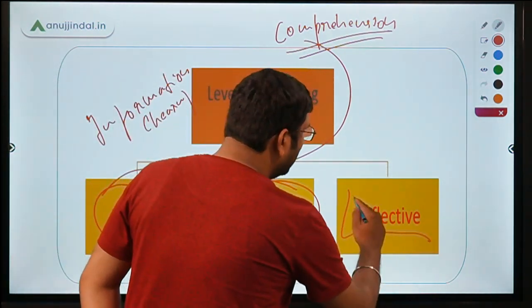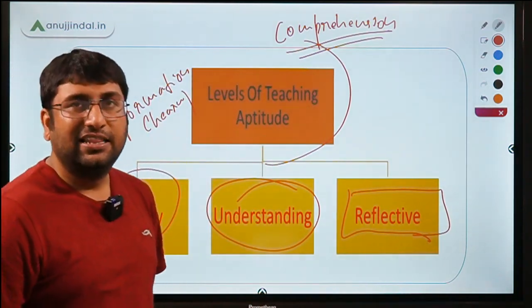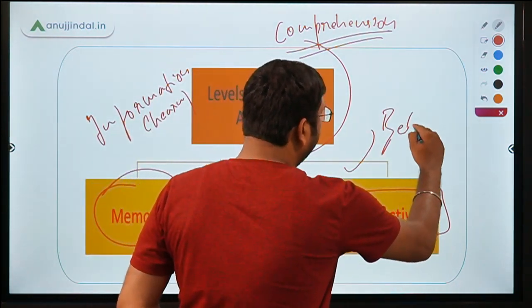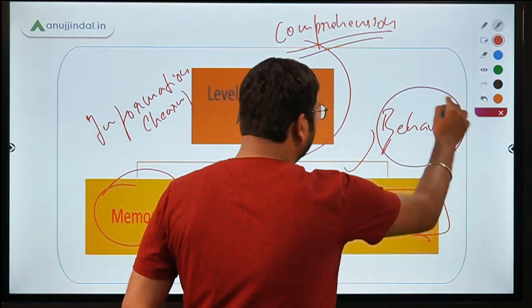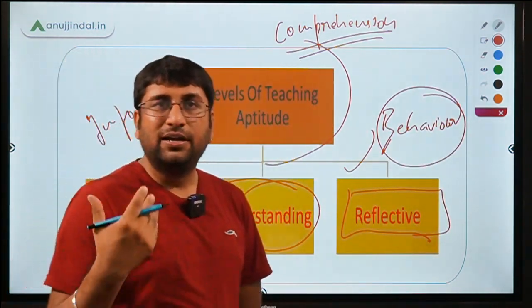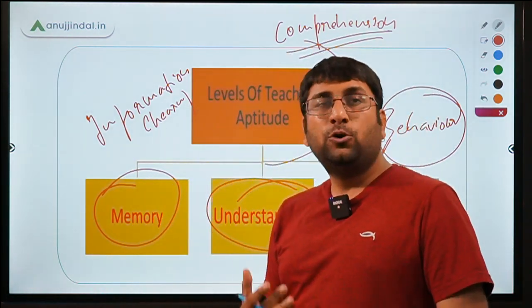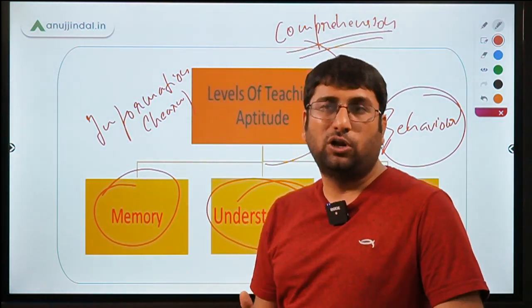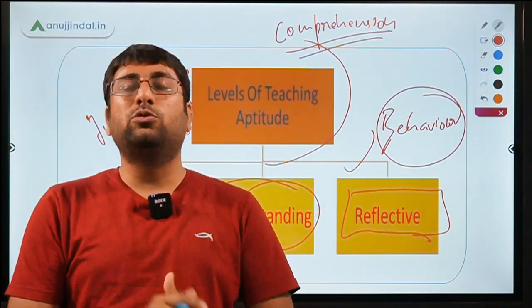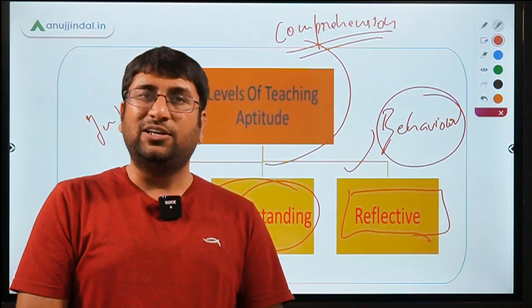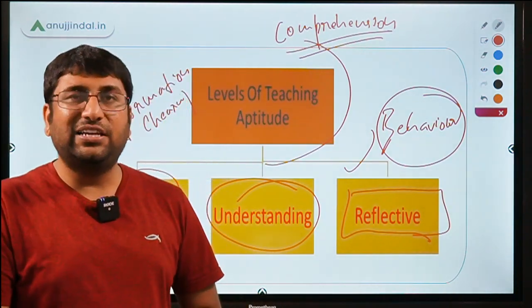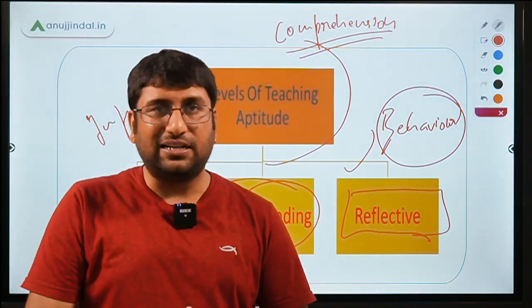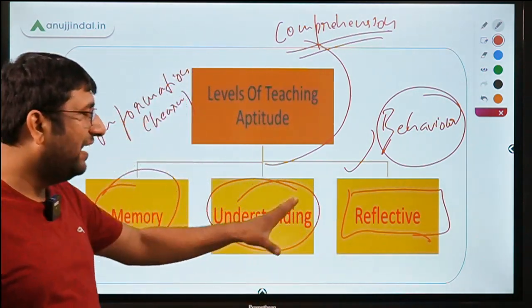The third and highest level of teaching is reflective learning. Here, you have studied and understood something, and now it is reflected in behavior — either in your own behavior or in the behavior of someone you are monitoring, such as an employee, a young student, or a younger sibling. For instance, if I keep telling students to come to class on time but I myself arrive late, that is a negative reflection from the teacher.